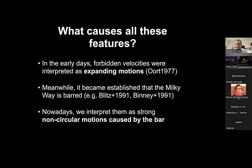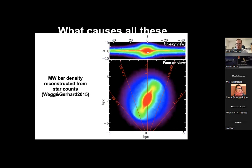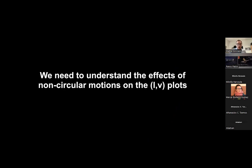Today we interpret most of these features as caused by strong non-circular motion due to the bar. Here is the Milky Way bar density reconstructed from star counts — a very elongated structure. The Sun is here, and the potential generated by this is also very non-axisymmetric. Now we need to understand the effects of non-circular motions on the LV plots, starting with small non-circular motions before discussing the strong ones driven by the bar.